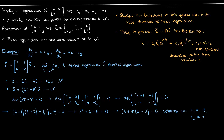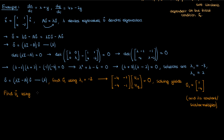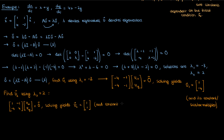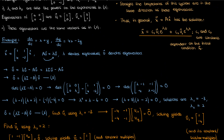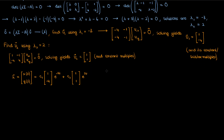Now let's find the eigenvectors. Going back to equation 3, for the first eigenvector V1 we use λ1 = −3. Applying it to the matrix equation and solving for the components V1x and V1y gives us the first eigenvector V1. For the second eigenvector V2 we use λ2 = 2. Applying it to the matrix equation and solving for V2x and V2y gives us V2. The general solution to this linear dynamical system is then obtained by plugging the eigenvalues and eigenvectors into the general solution, where c1 and c2 are constants that depend on the initial conditions.